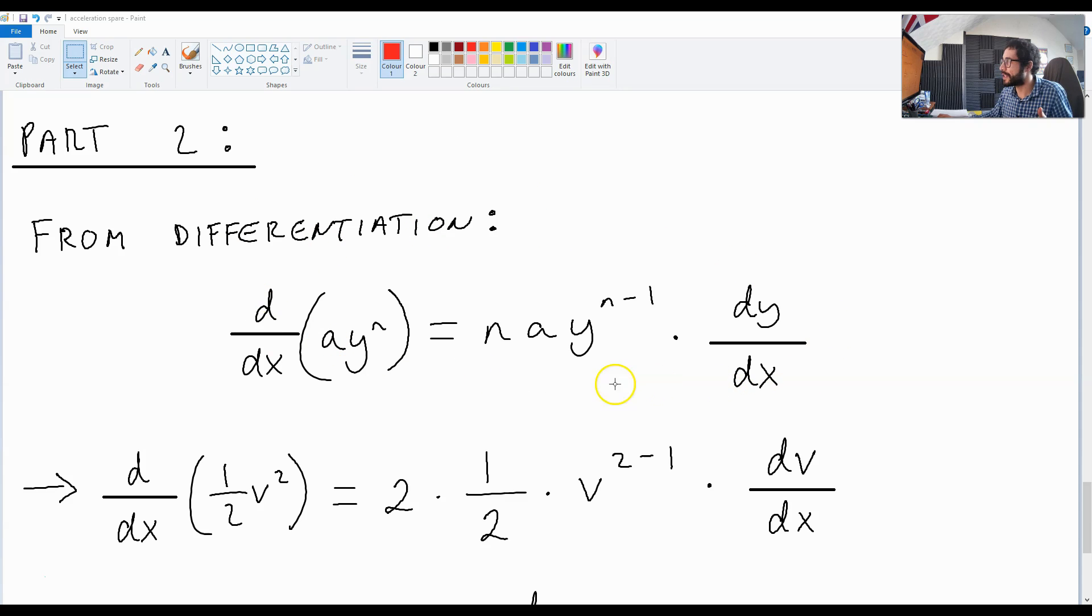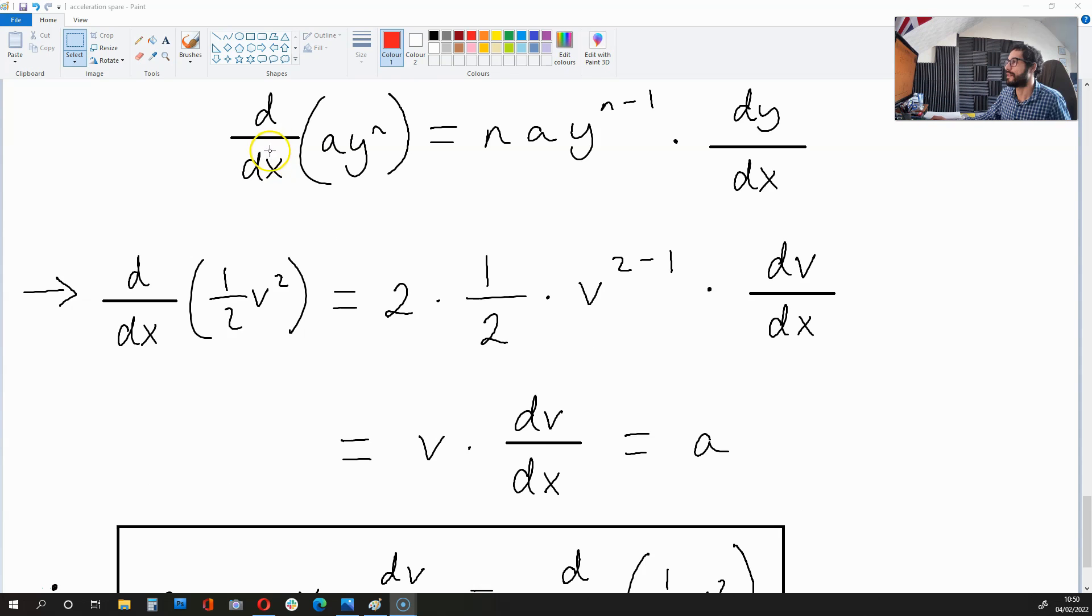Just below this video, I've left a link to another video, which shows you how to derive it from scratch. So if this up here is true, then we can say that d over dx, half v squared,